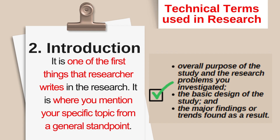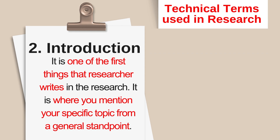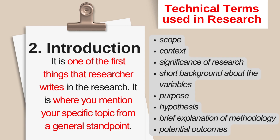Next, we have the introduction — or in some institutions, they call it the background or chapter 1. It is one of the first things the researcher writes. It is where you mention your specific topic from a general standpoint. It establishes the scope, context, and significance of the research. It also states short background information about the variables, as well as purpose, hypothesis, brief explanation of methodology, and potential outcomes.